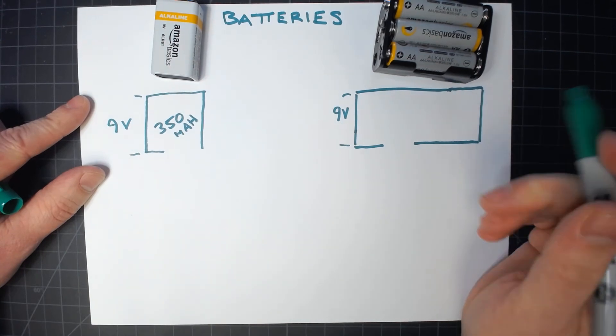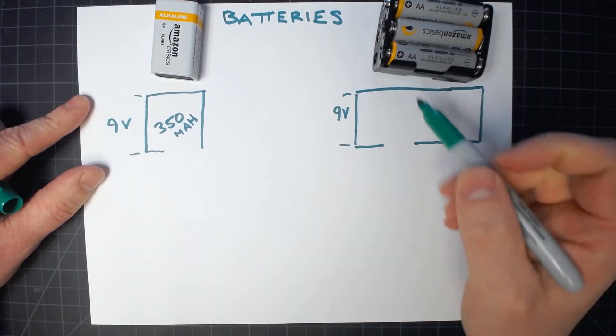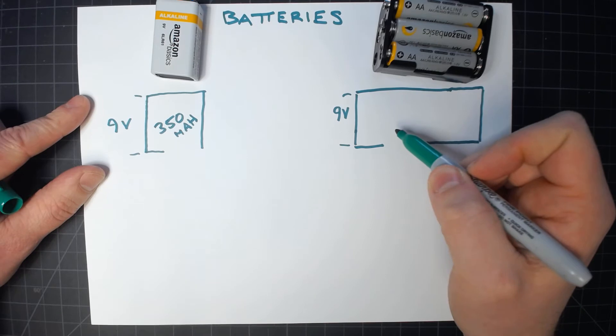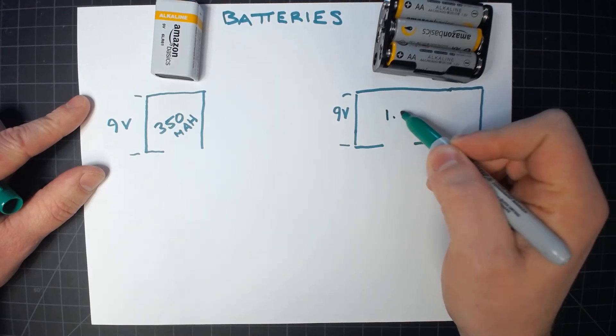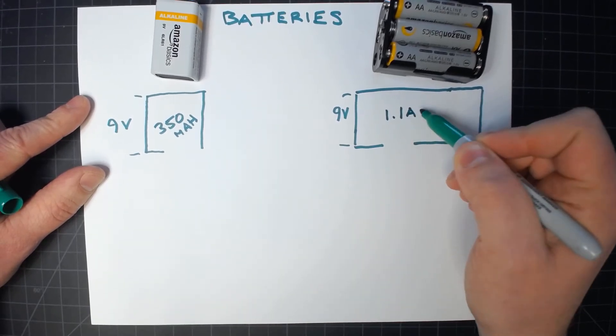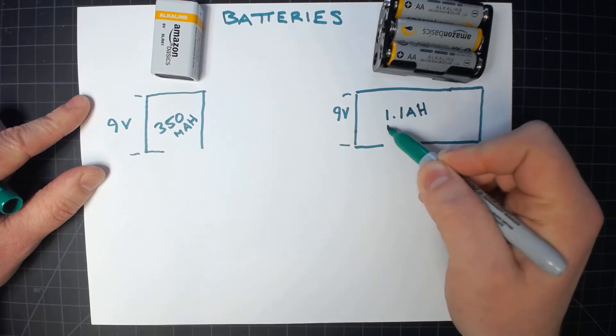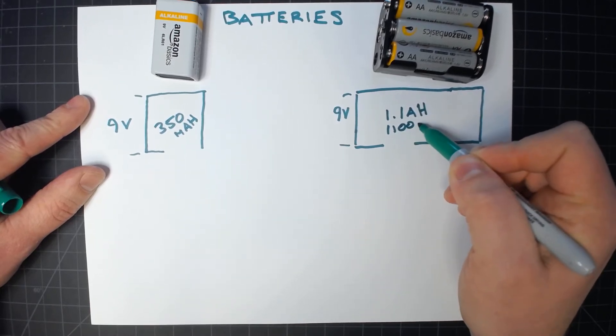This kind of a 9 volt battery, this pack with the double A's, is going to be probably about three times that. So we'll say 1.1 amp hours or 1,100 milliamp hours.